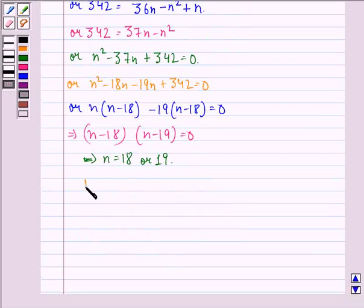Now here, 19th term, that is T19 equals A plus, now N will be 19, so N minus 1 into D.